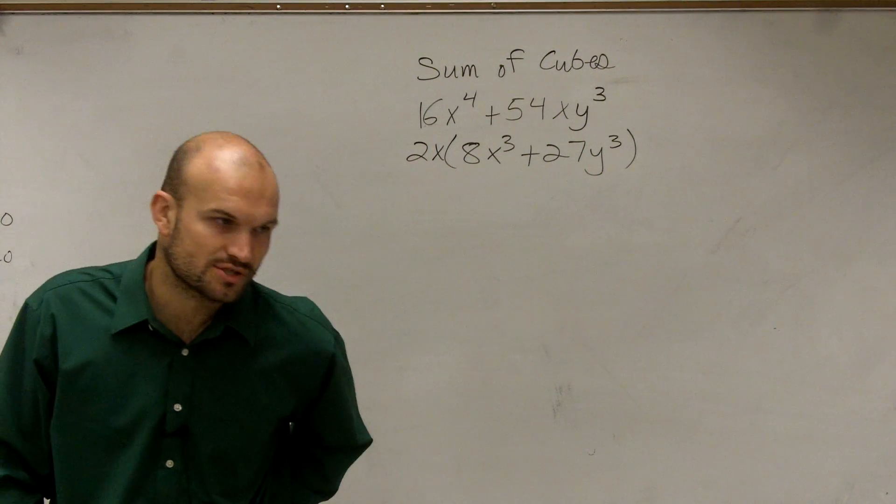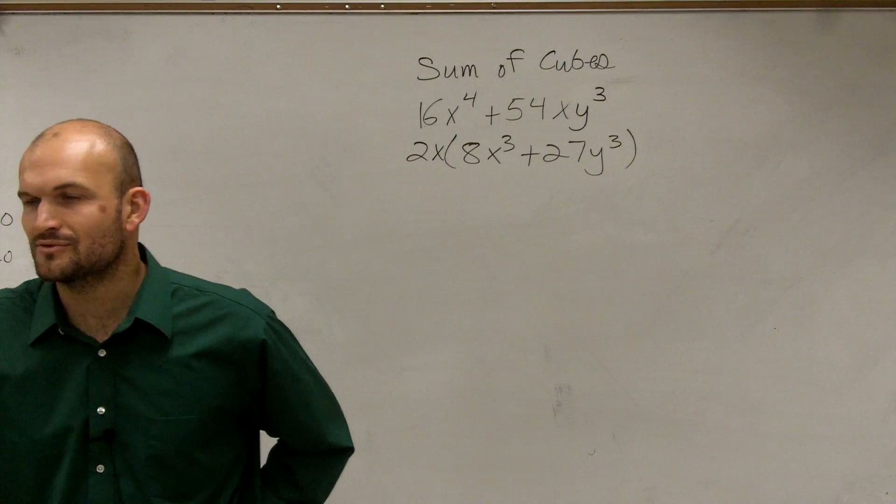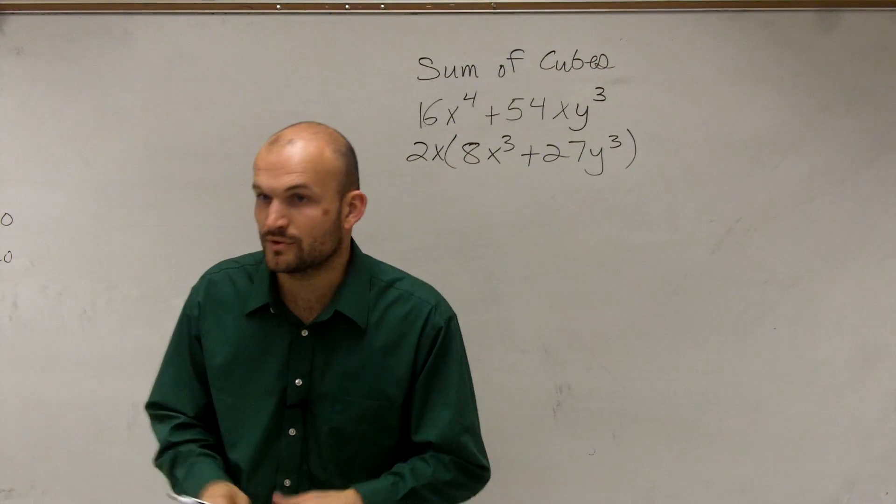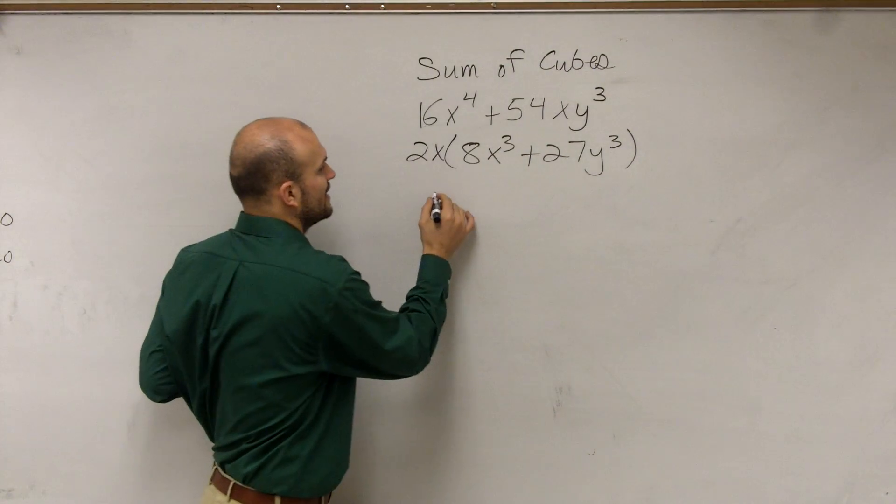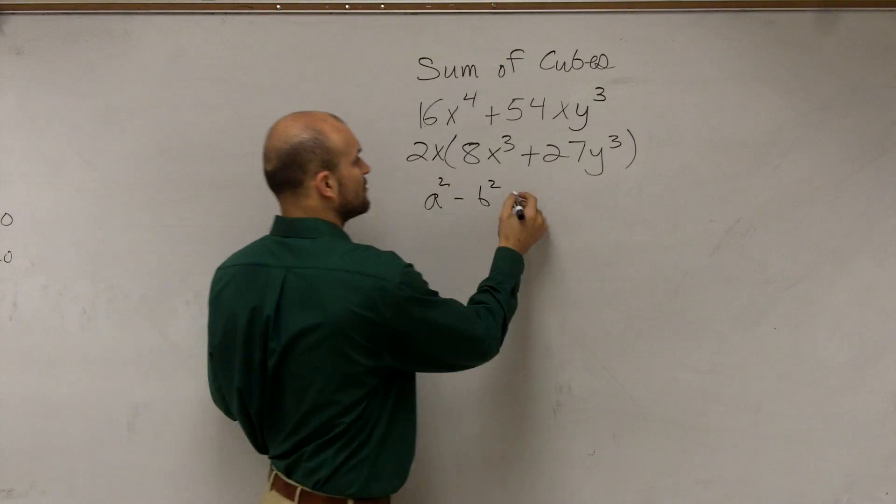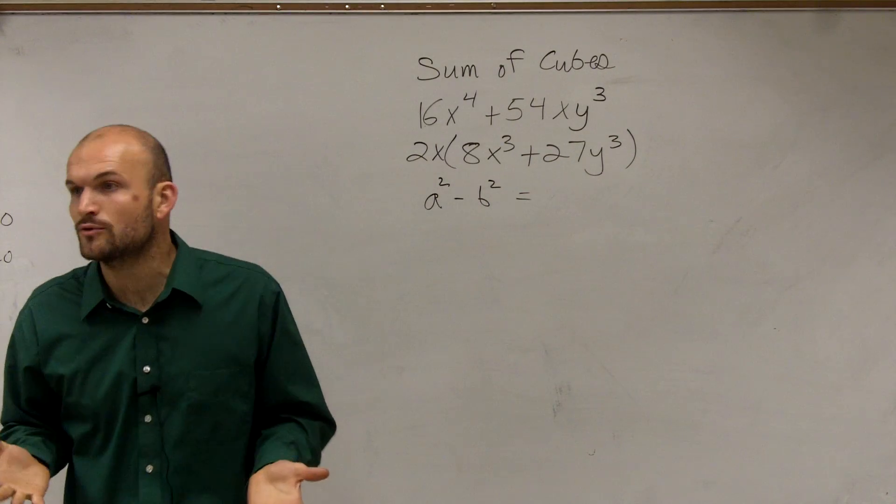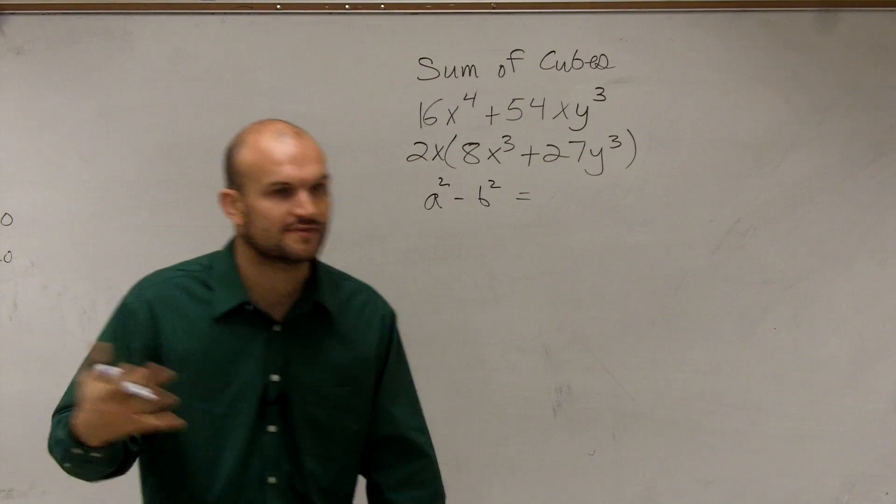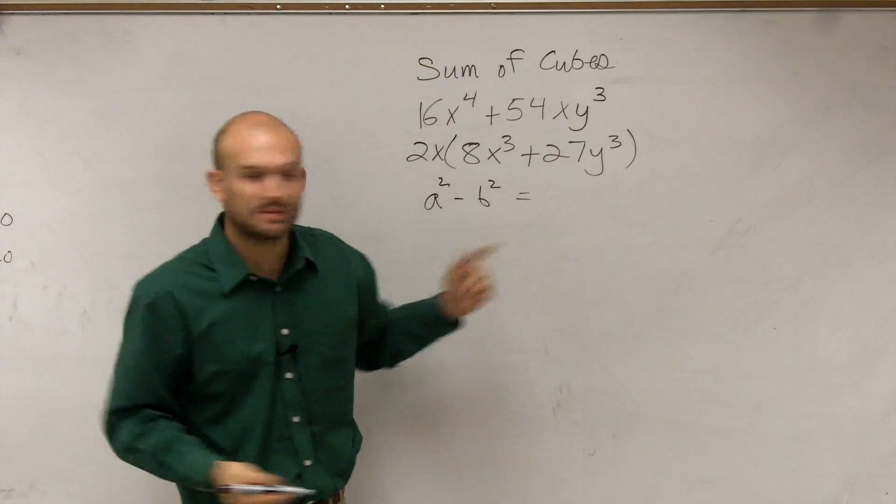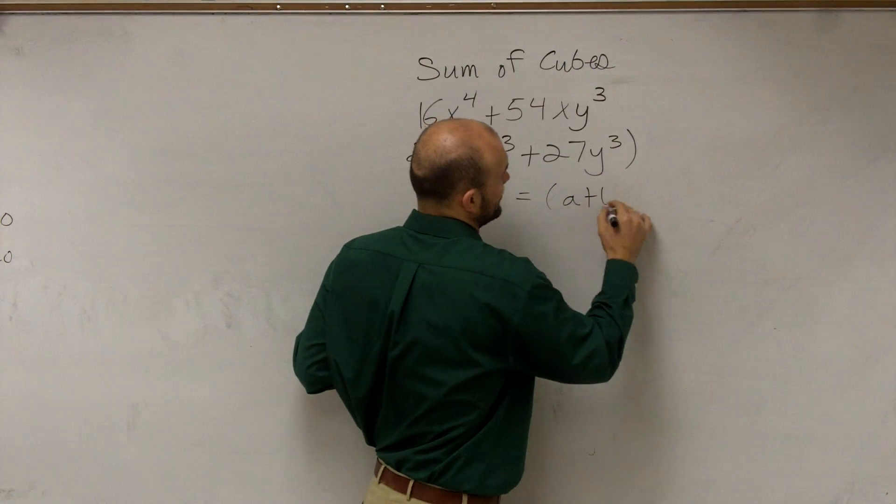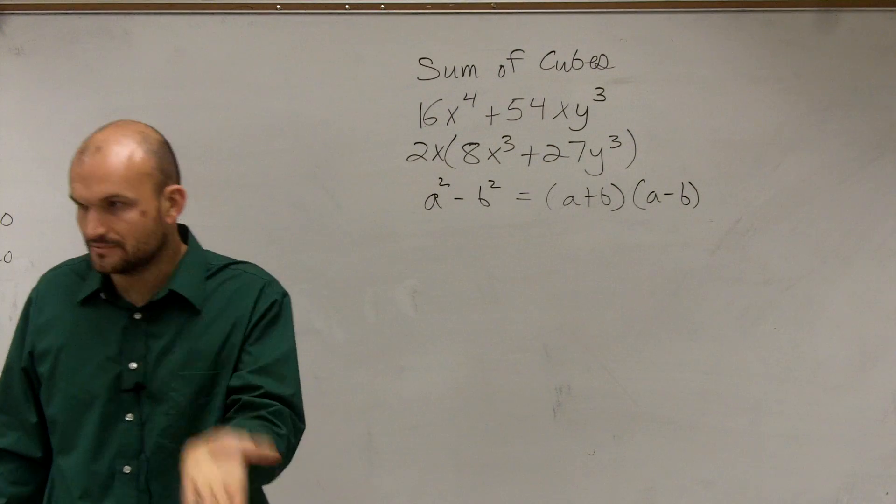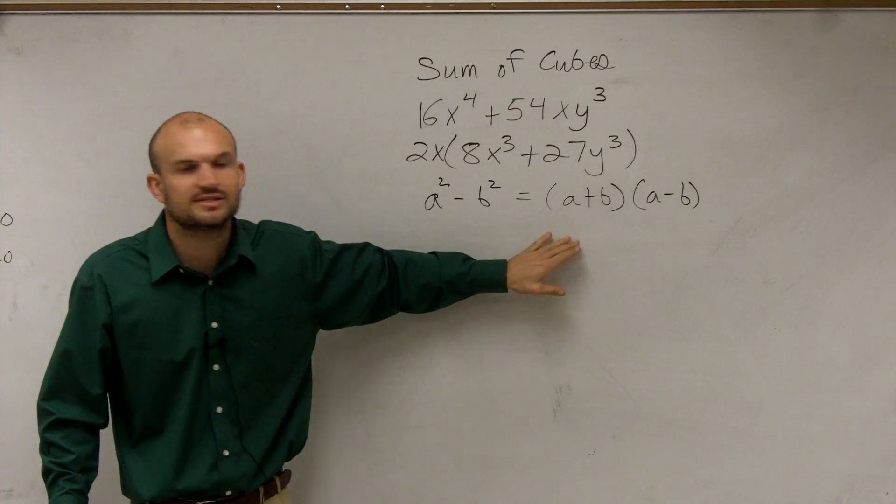Now we don't really have a factoring portion with this. What I want to remind you guys of is the difference of two squares. When we have the difference of two squares, we could factor this very quickly. We've practiced showing you difference of two squares because we know that a factored form of this is a plus b times a minus b. That was kind of a general rule that we've talked about.